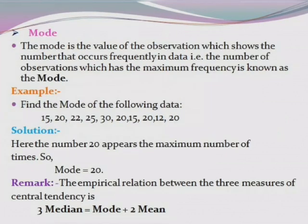The third measure of central tendency is mode. The mode is the value of the observation that occurs most frequently in the data — that is, the observation with the maximum frequency. For example, find the mode of: 15, 20, 22, 25, 30, 20, 15, 20, 12, 20. The number 20 appears the maximum number of times, so the mode is 20.